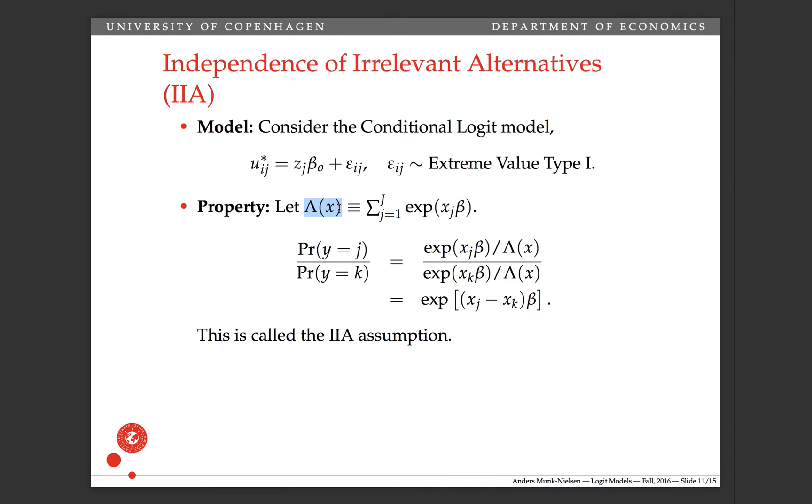Then, if we define the denominator of the choice probabilities as this lambda thing, then that thing, this denominator is the same depending on whether we look at the probability of Y equals J or the probability of Y equals K. This denominator is the same for both of these. The choice probability is always the exponential of XJ beta divided by the sum of all of these exponential XJ betas for the other alternatives. So those are actually the same for these two, so they cancel out. And then we just have exponential function of this guy over exponential of this guy. And the exponential of some number divided by the exponential of another number is the exponential of first number minus second number. You can see that beta is the same, so it goes outside, and that's why we have this thing left.